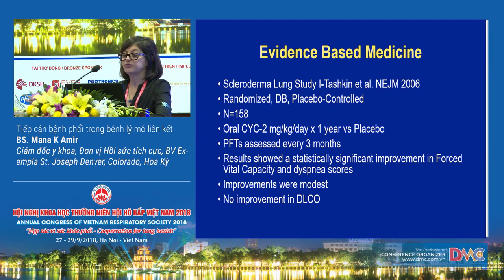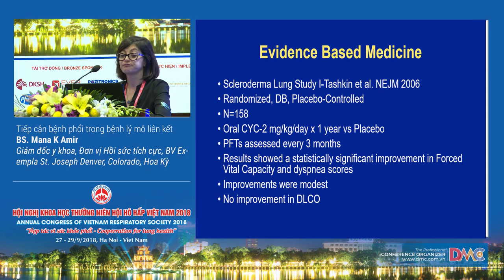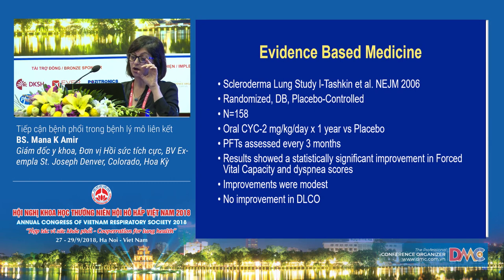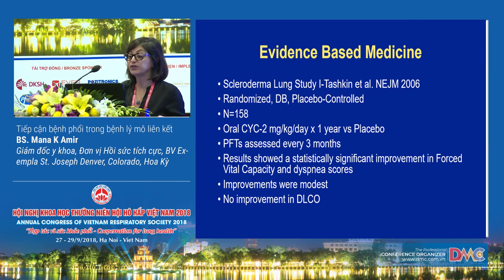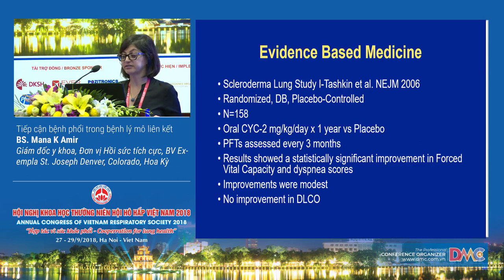There is not a lot of evidence-based medicine in this field, but let me review the few evidence-based studies. The first was the Scleroderma Lung Study published in the New England Journal in 2006 — a randomized, double-blinded, placebo-controlled study of 158 patients. Patients received cyclophosphamide at 2 mg/kg/day over one year or placebo. Results showed statistically significant improvement in forced vital capacity and dyspnea scores with cyclophosphamide, though improvements were very modest and there was no improvement in DLCO, only in forced vital capacity.